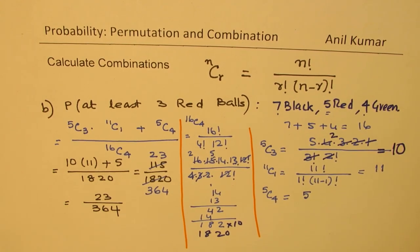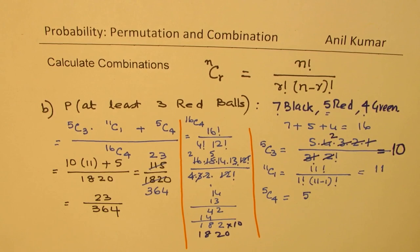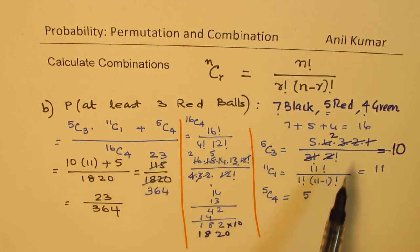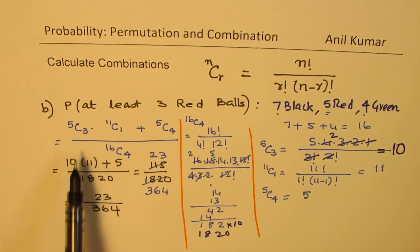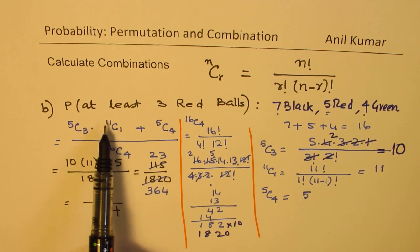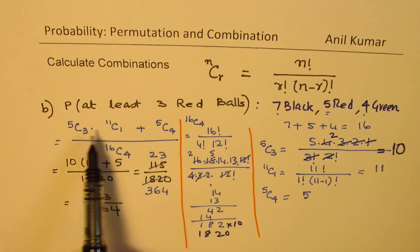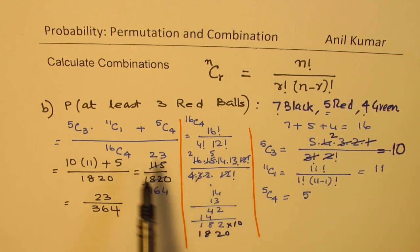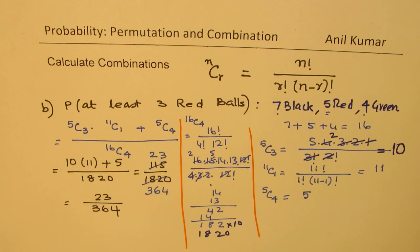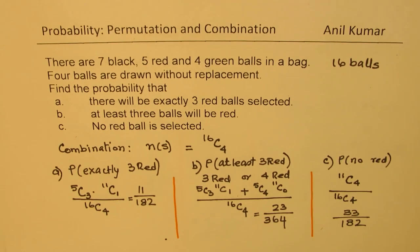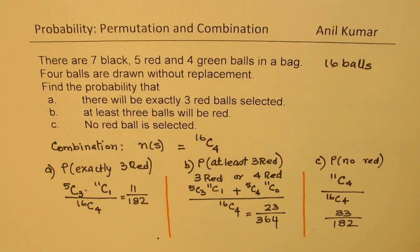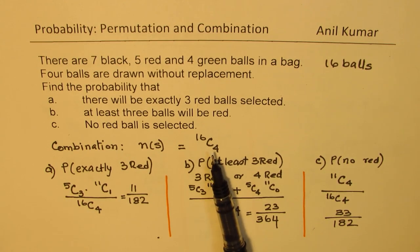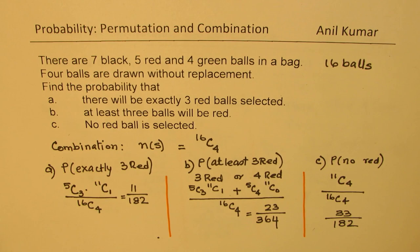I hope the steps for calculation are clear. It looks like a big amount of calculation, but once you practice a bit you can do it directly. 5C3 is 10, 11C1 is 11 — not very difficult. 16C4 requires more multiplication, which you can do on the side. If a calculator is not allowed, it is worthwhile to practice some questions and understand how to calculate combinations. All these questions can easily be done using combinations. Feel free to write your comments, share your views, and if you like and subscribe to my videos, that would be great. Thanks for your time and all the best.